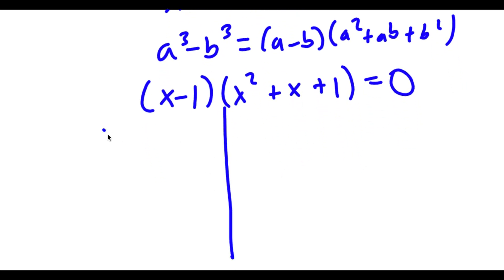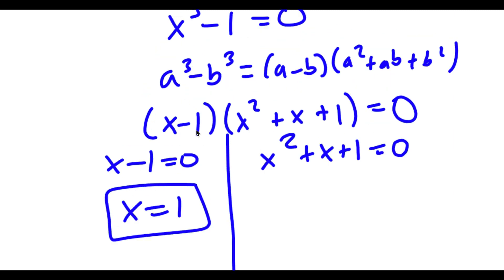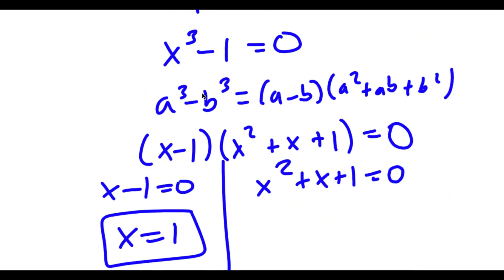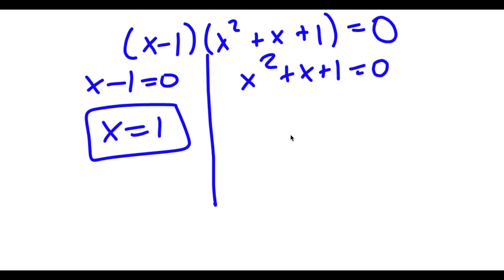This gives me two equations: I get x minus 1 equals 0, and x squared plus x plus 1 equals 0. So for x minus 1 equals 0, we get x equals 1, which we already got before.